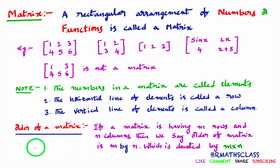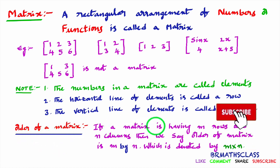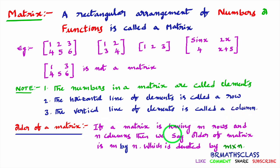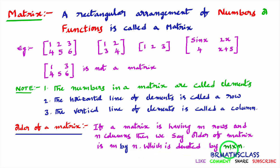Now we will understand what is the order of a matrix. If a matrix has m rows and n columns, then we say the order of the matrix is m by n. Note: some people read it as m into n — that is wrong. It is read as m by n. If a matrix has m rows and n columns, then we say the order of the matrix is m by n, denoted as m×n.